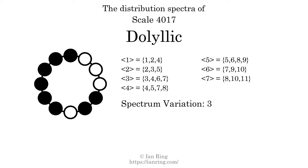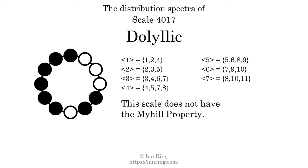The spectrum variation is the sum of all the widths, divided by the number of tones. The spectrum variation of this scale is 3. Since the variation is greater than 0, this indicates that the scale is not perfectly even. The highest spectrum width is 4. Since this is greater than 1, we know that this scale is not maximally even. If every spectrum has exactly 2 specific intervals, we call that the Myhill property. This scale does not have the Myhill property. Since the generic interval ranges overlap, this scale is an improper scale.